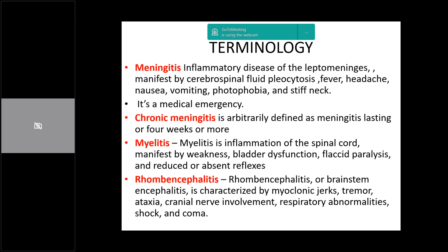Conditions like Bickerstaff encephalitis are essentially brainstem encephalitis — very catastrophic conditions manifesting with severe alteration of sensorium, myoclonic jerks, tremors, brainstem involvement, and respiratory abnormalities. Most of these patients are in coma. We had a case of Bickerstaff encephalitis with non-reactive pupils and very slow brain activity on EEG. We had thought the patient was brain dead, but gradually over one month the patient started to improve and almost sat up and got discharged.